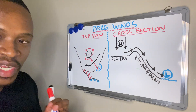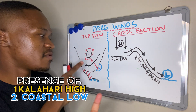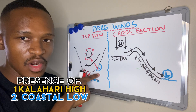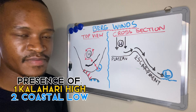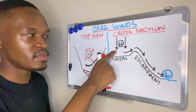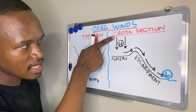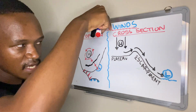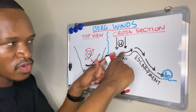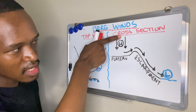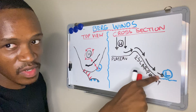In winter, to get berg winds we need the presence of two things: a Kalahari High and a coastal low. When there is a high pressure, the air is sinking or descending above the plateau, and then it diverges at the surface going towards the coastal low.